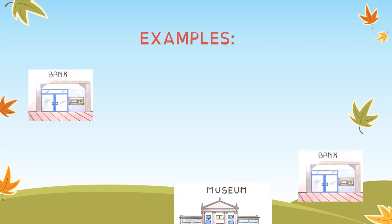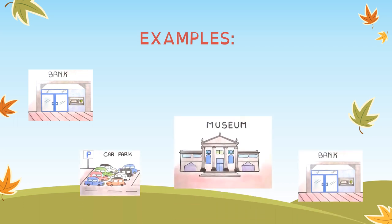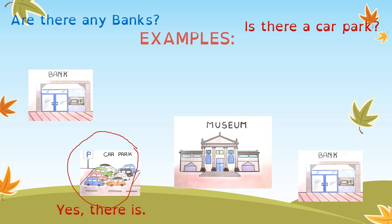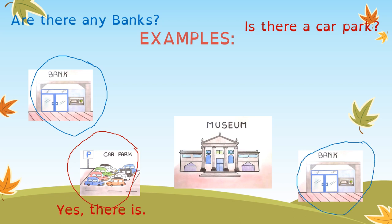Look at this picture. We are going to try to answer this question: 'Is there a car park?' Look here — so the answer is 'Yes, there is.' The next one: 'Are there any banks?' Look, we have one and two, so the answer is 'Yes, there are.' Very good.